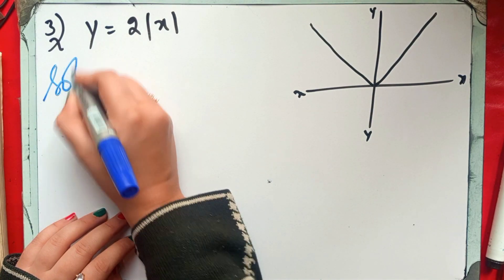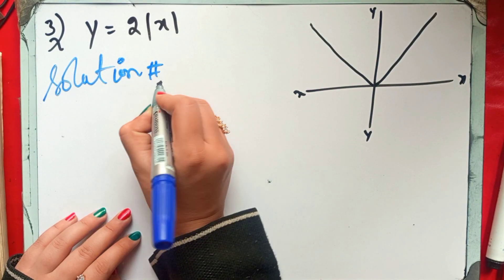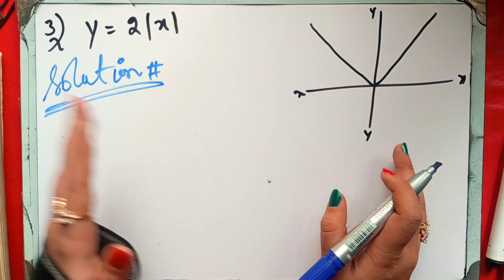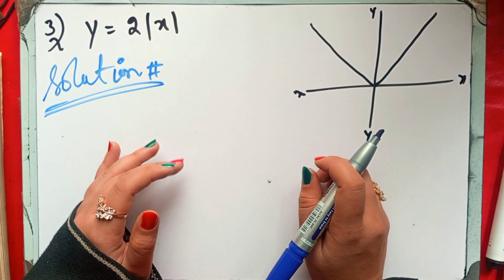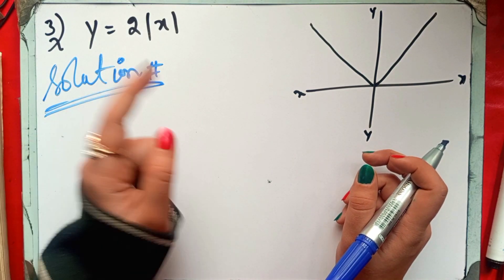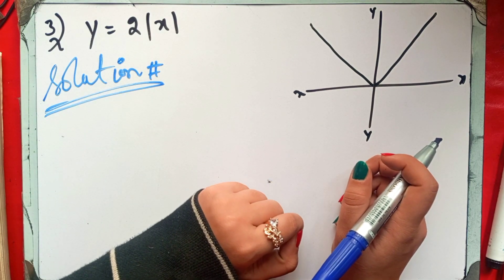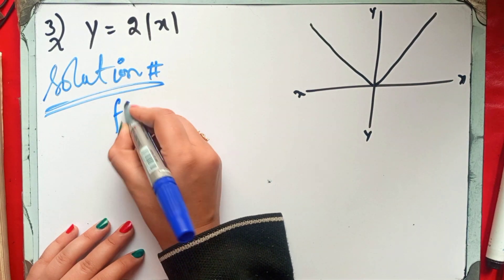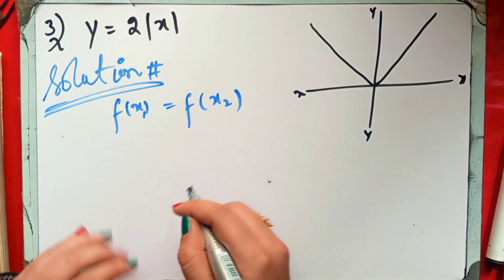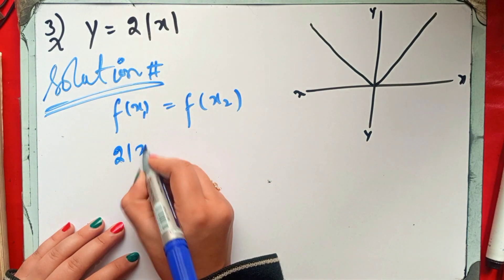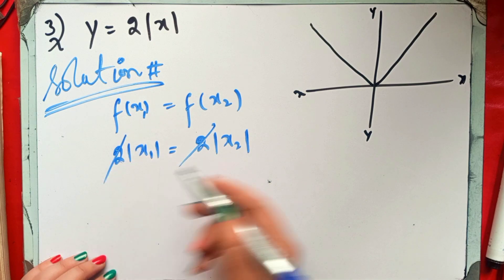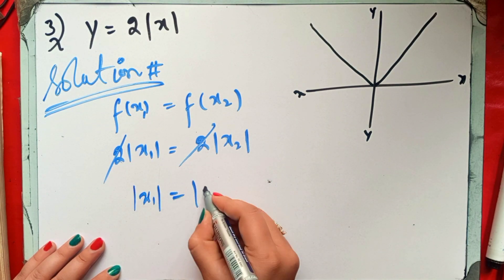Let's start the solution. If you haven't subscribed to the channel yet, please do so to appreciate the hard work. We will set f(x₁) = f(x₂), as we have been doing since question number 1. So 2|x₁| = 2|x₂|. The 2's cancel, leaving |x₁| = |x₂|.